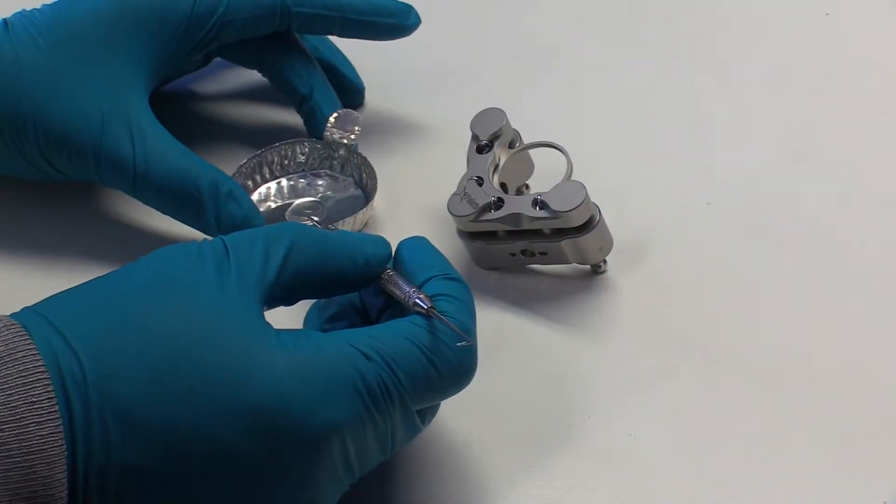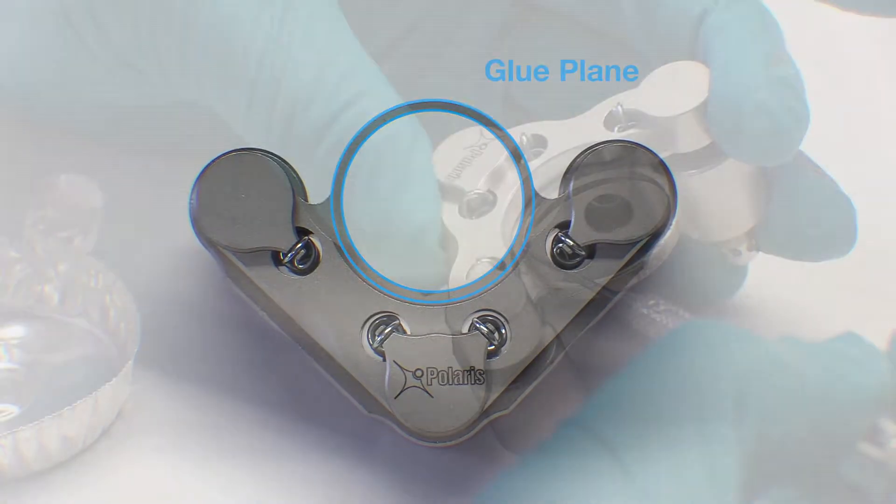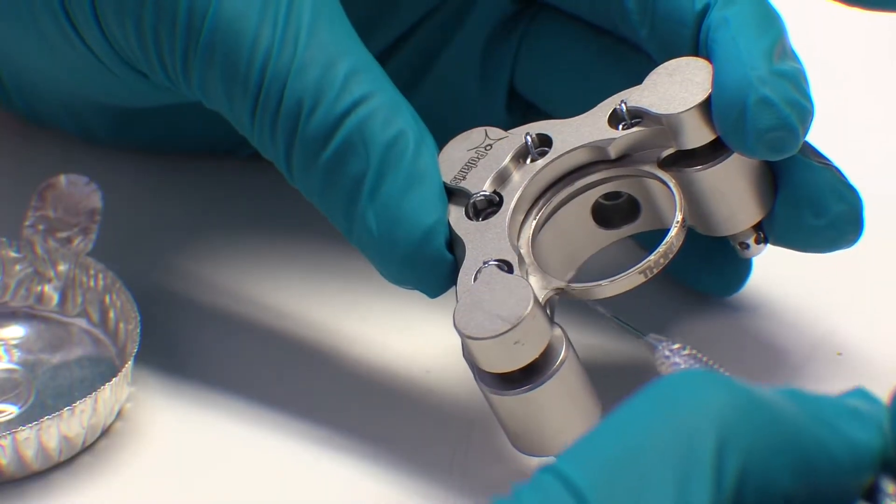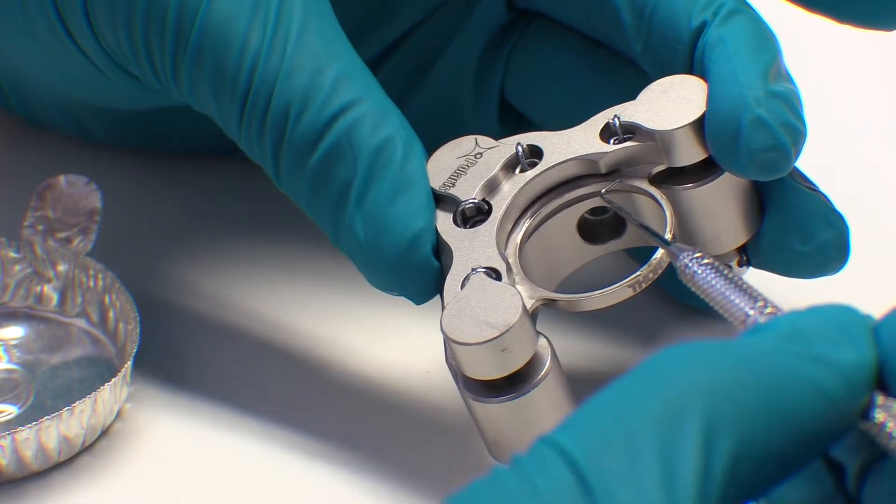Apply your optical adhesive to the glue plane of the mount. Take care to apply the adhesive evenly in a single layer around the full glue plane to ensure a uniform bond between the optic and the mount.